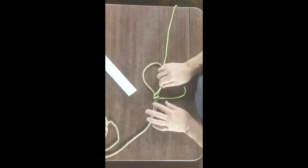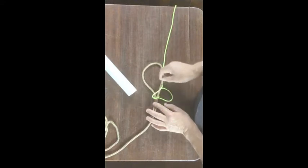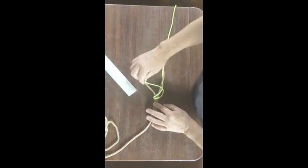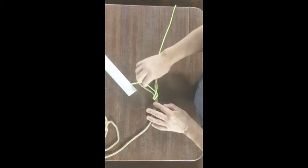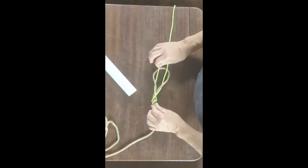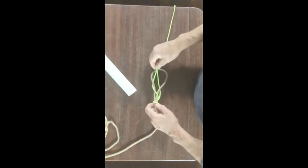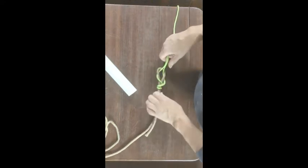Again, lift up this loop, go through it. Don't go down at this point, go under and come back up. So both parts come up through the bite, slide it down, cinch it up.